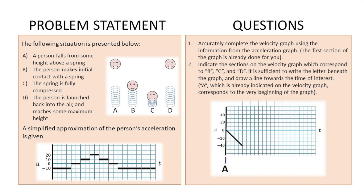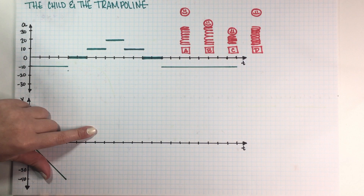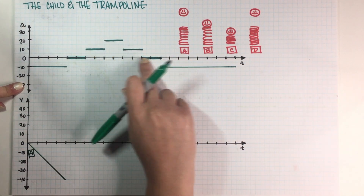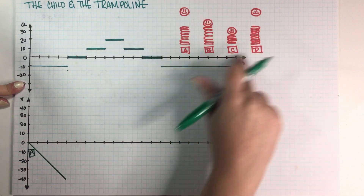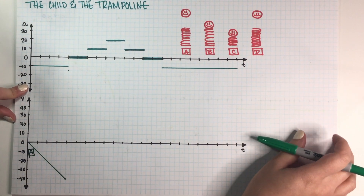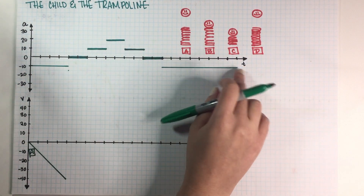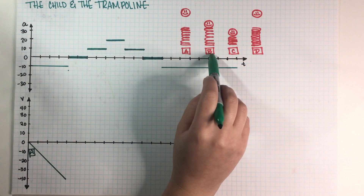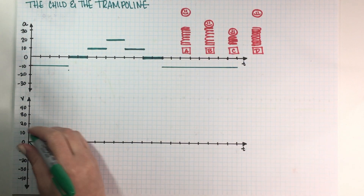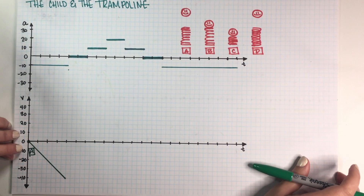So as you can see, I have everything written down in my notes. I have the acceleration graph over here with all of the chunks, and I have the scenario drawn over here. We basically need to do two things: complete this velocity graph using the acceleration as information, and then find where points b, c, and d are on the graph. Point a we were already told, so we don't really have to worry about a.